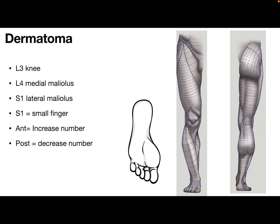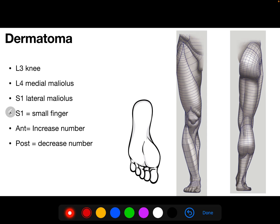Regarding the dermatomes, there's an easy way we can separate anterior from posterior. We start from L2 — below the inguinal ligament there will be L2. L2 covers most of the thigh, the upper half, including the middle and lateral parts. Then L3 continues from the lower half of the thigh, takes the knee, and a little bit of the middle part of the leg. So L3 covers the knee.